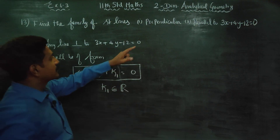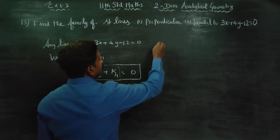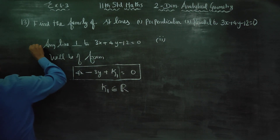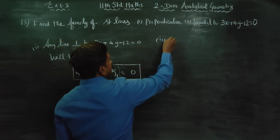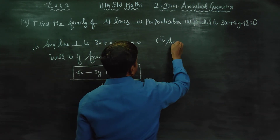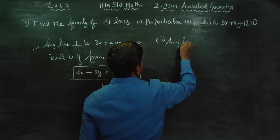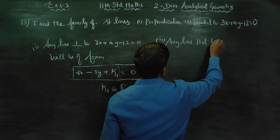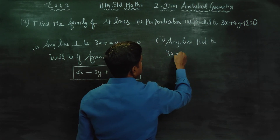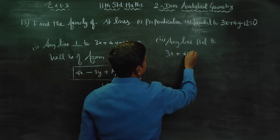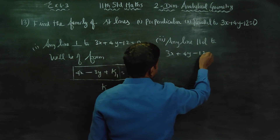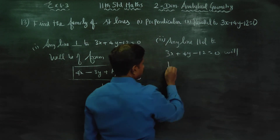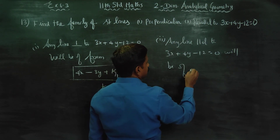Now moving to the parallel case. This is my first subdivision. Any line parallel to 3x plus 4y minus 12 is equal to 0 will be of the form.